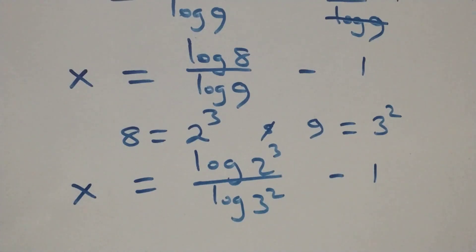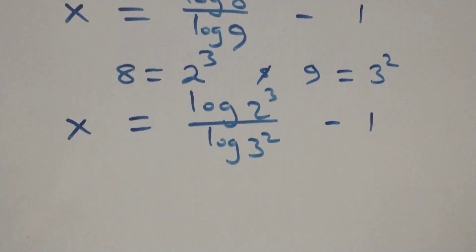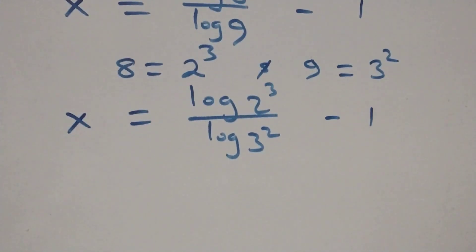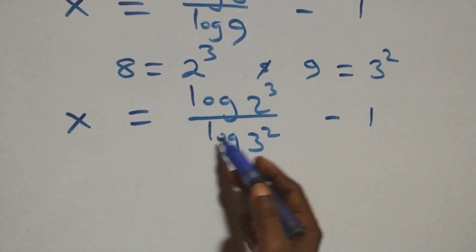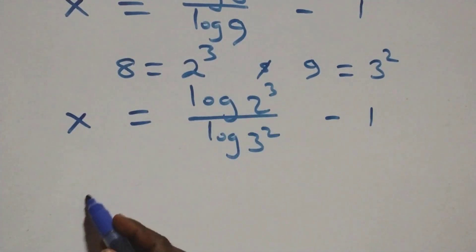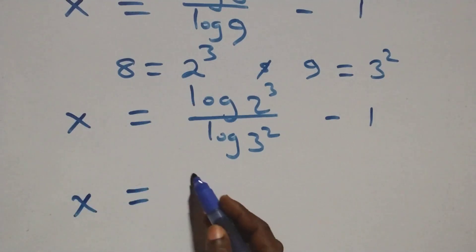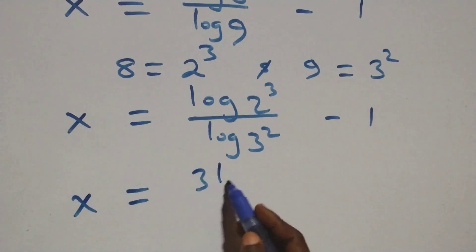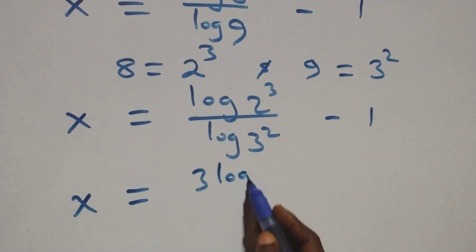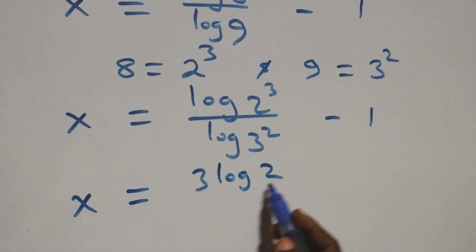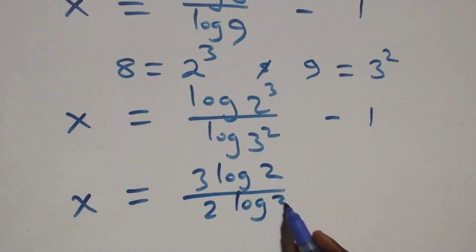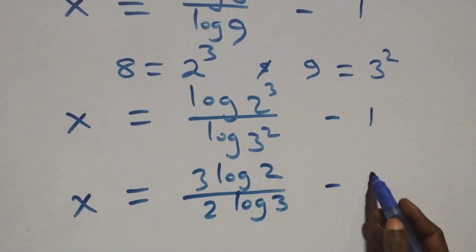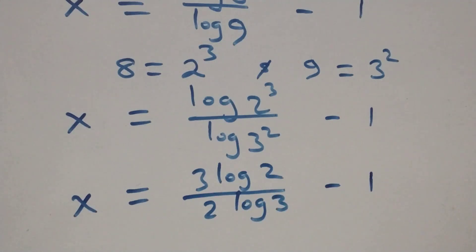At the next step, we apply the power of logarithm and we have x equals 3 log 2 over 2 log 3 minus 1.